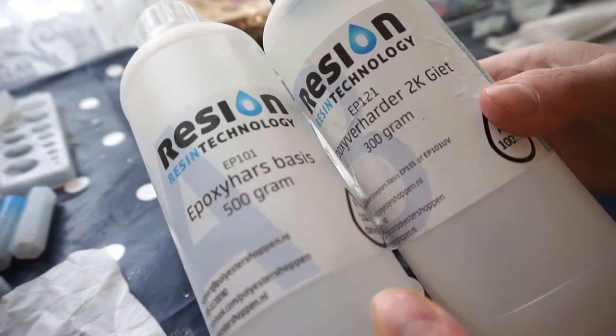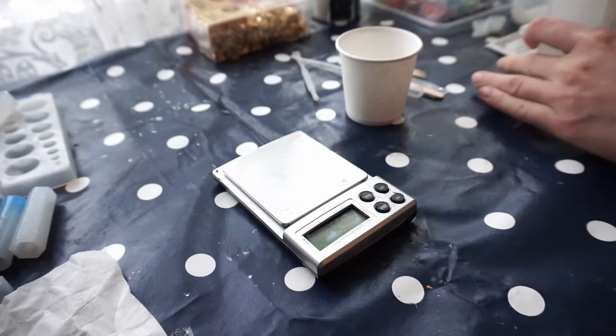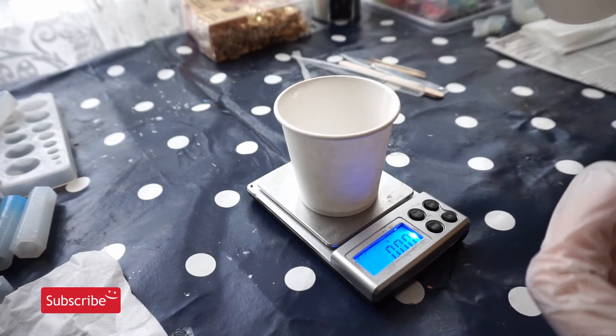I'm using resin from a local Dutch webshop. I'm happy with the UV resistance, so it does not yellow. The one downside of this resin is that you need to mix it 100 units to 60 units, which is slightly inconvenient in comparison to 50-51 for example.